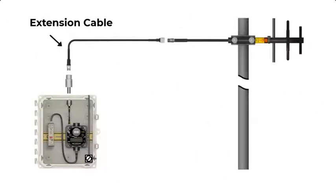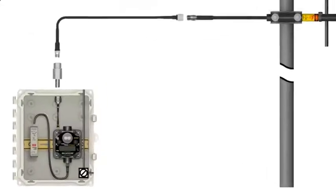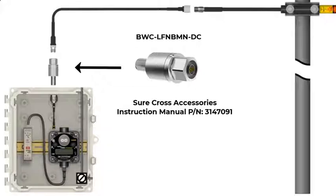Note, radio signals cannot penetrate metal. Antenna extension cables can be used to mount an antenna above or around a metal obstruction. Whenever using an antenna outdoors, be sure to incorporate a surge suppressor to guard against lightning strikes and static discharge.